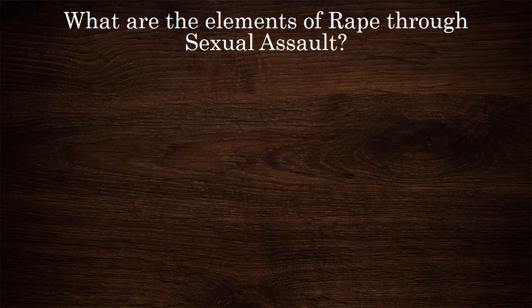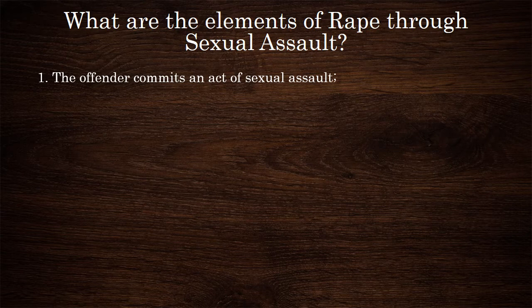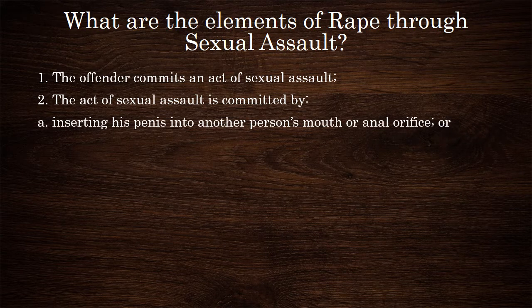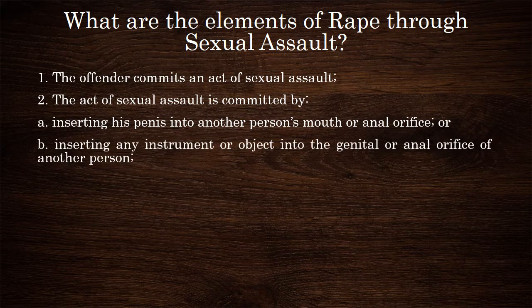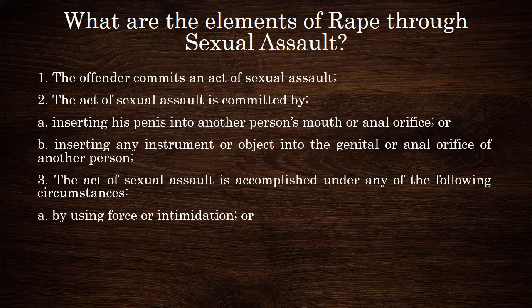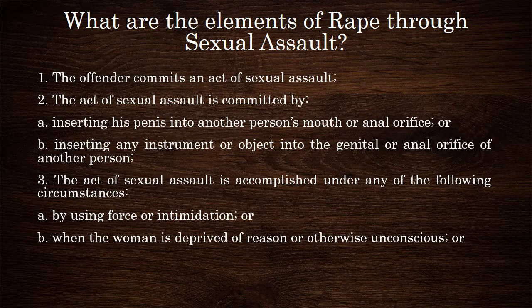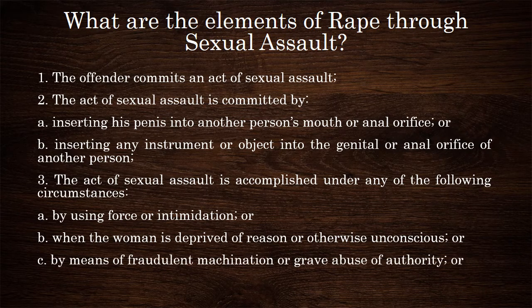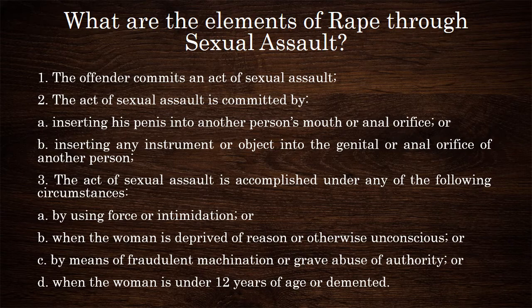What are the elements of rape through sexual assault? The first element is that the offender commits an act of sexual assault. Second, the act of sexual assault is committed by: (A) inserting his penis into another person's mouth or anal orifice, or (B) inserting any instrument or object into the genital or anal orifice of another person. Third, the act is accomplished under any of the following circumstances: (A) by using force or intimidation, (B) when the woman is deprived of reason or otherwise unconscious, (C) by means of fraudulent machination or grave abuse of authority, or (D) when the woman is under 12 years of age or demented.